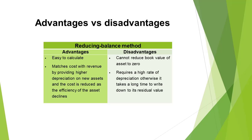The advantages of using the reducing balance method are that it is easy to calculate and matches the cost with the revenue by providing higher depreciation on new assets, and the cost is reduced as the efficiency of the asset declines. The disadvantages are that the business cannot reduce the book value of assets to zero, it requires a high rate of depreciation, otherwise it takes a very long time to write down to its residual value.